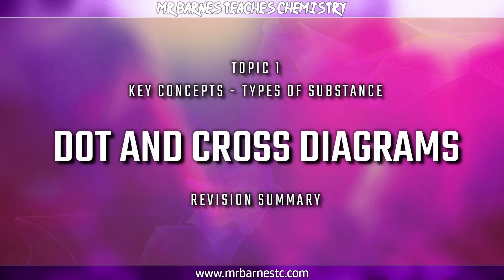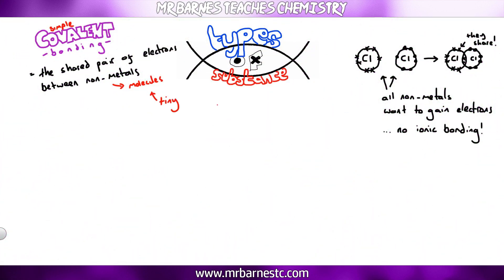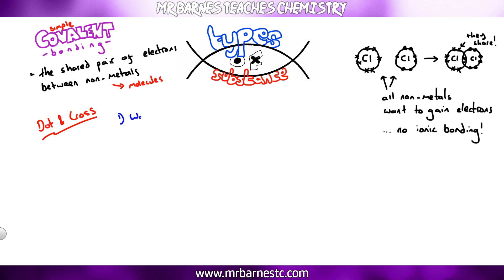Now that we know what covalent bonding is, let's go on to simple covalent and how you can draw it. Simple covalent molecules are tiny — their average size is 1 times 10 to the minus 10 meters. What you need to be able to do is draw the covalent bonding for any non-metals. To do that, step one is to work out the valency, which is simply how many bonds each non-metal can make.